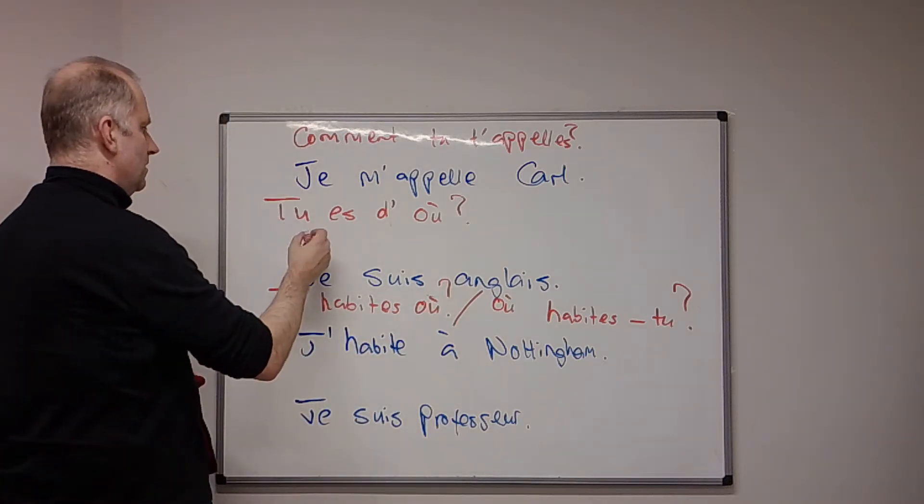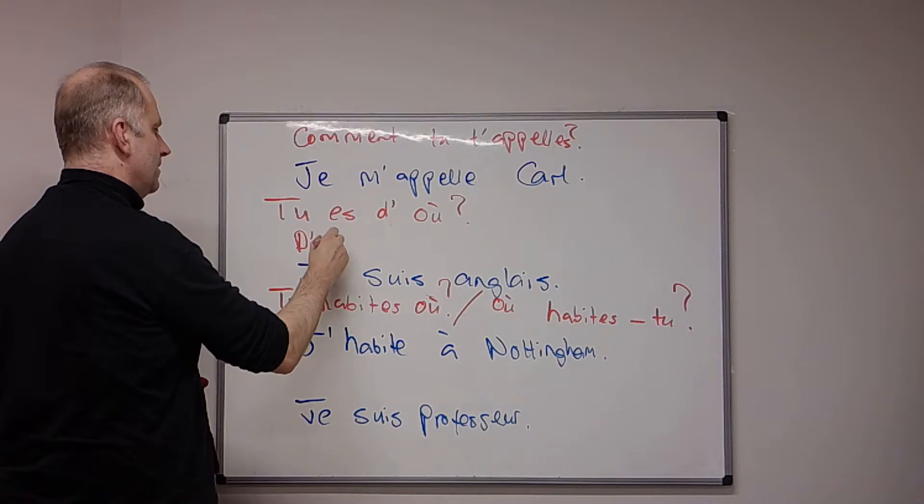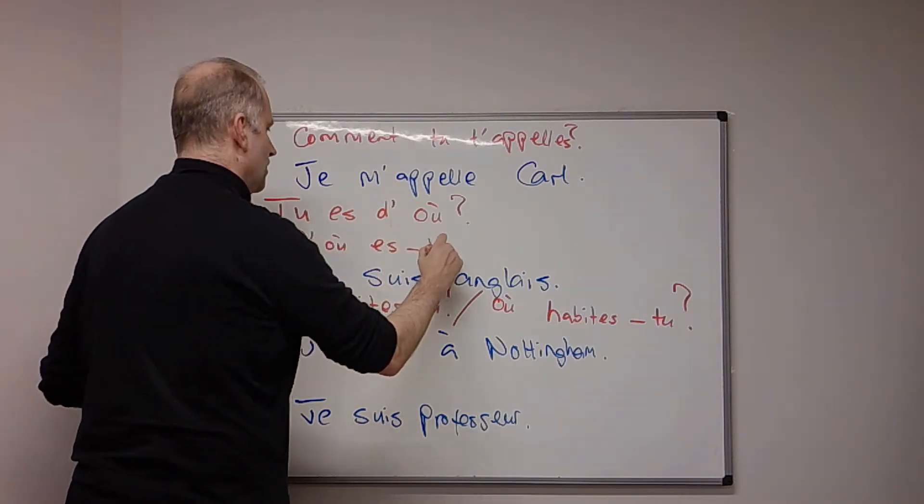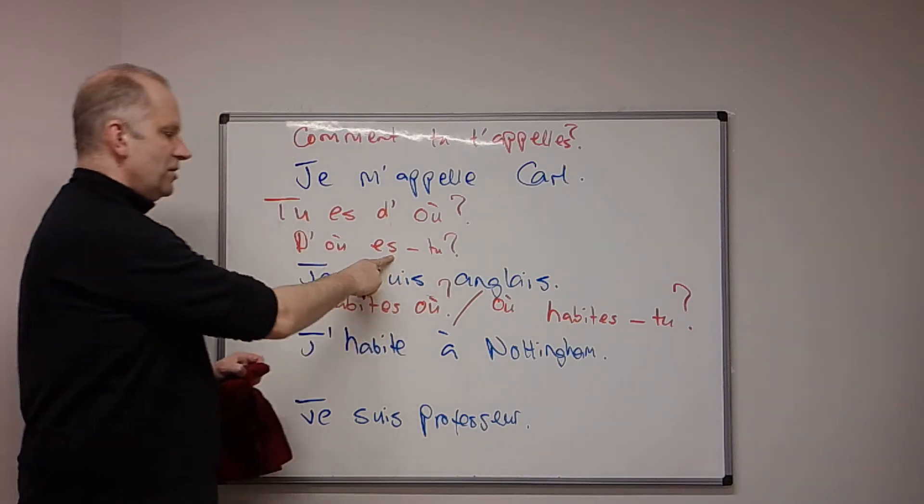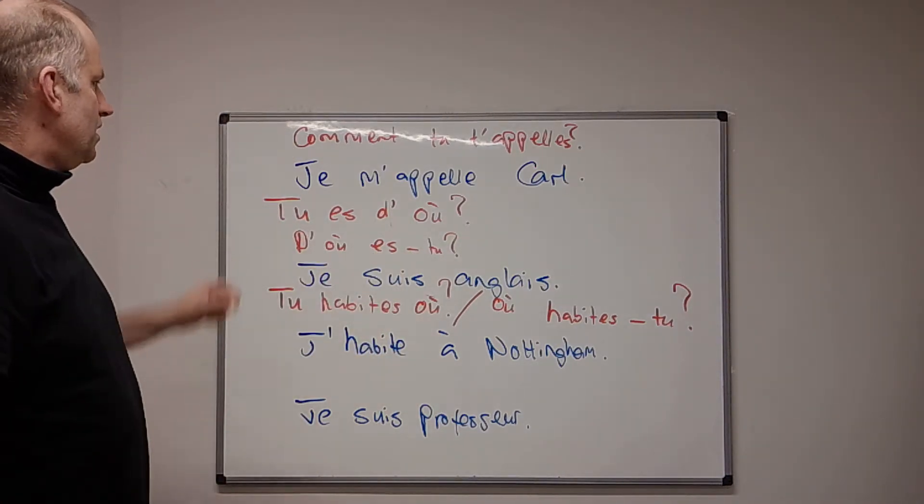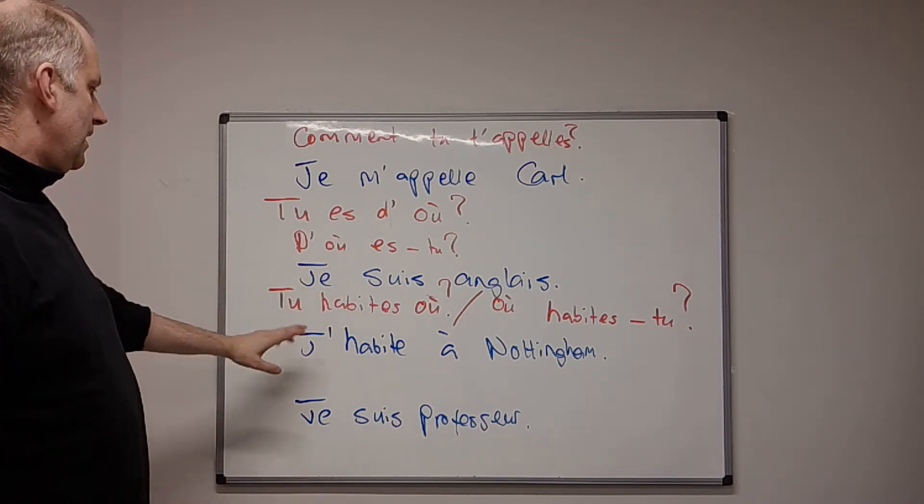Or, we could also say, we could put this at the front, we could say, from where are you, d'où es-tu. Remembering, when you put the verb before the subject, there's a hyphen between them. Tu es d'où, or d'où es-tu, doesn't really matter.